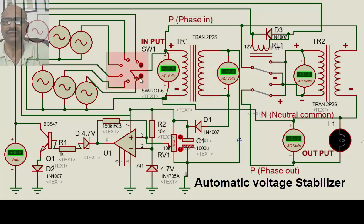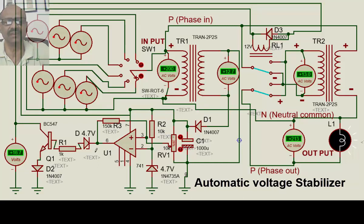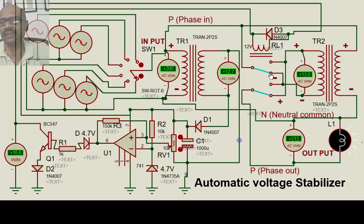Now I will put the rotary switch to the 200 V position and see how it works. When we switch on, we are feeding 200 volts. The signal transformer gives about 12.7 V filtered DC, which powers the op-amp, transistor, and relay. In the main transformer, the positive comes through the secondary, and the relay — in its default position — connects to the negative point.